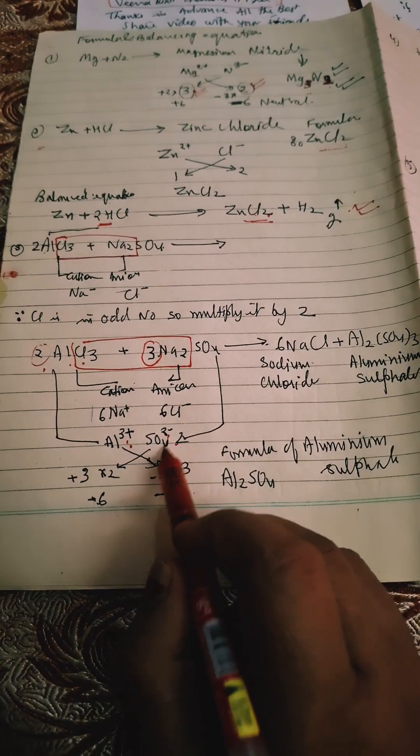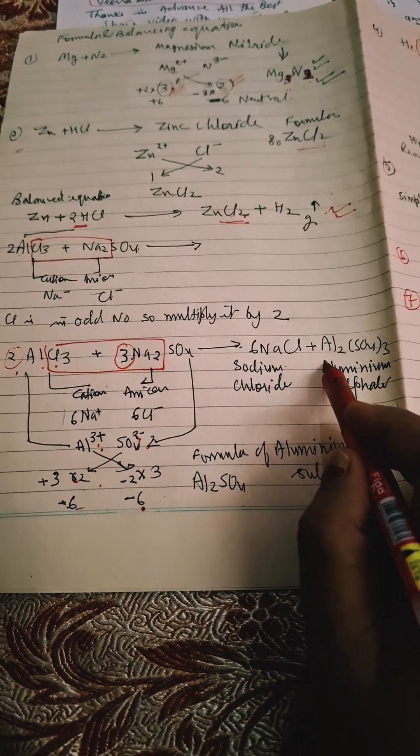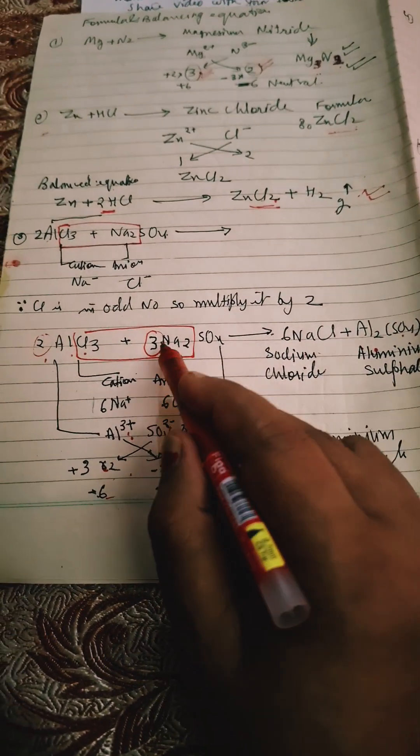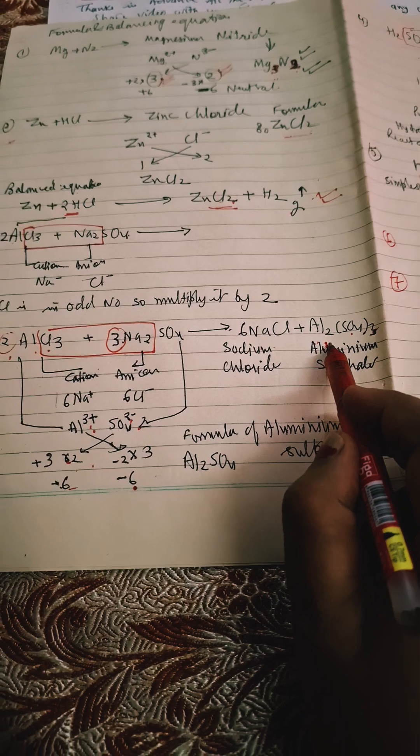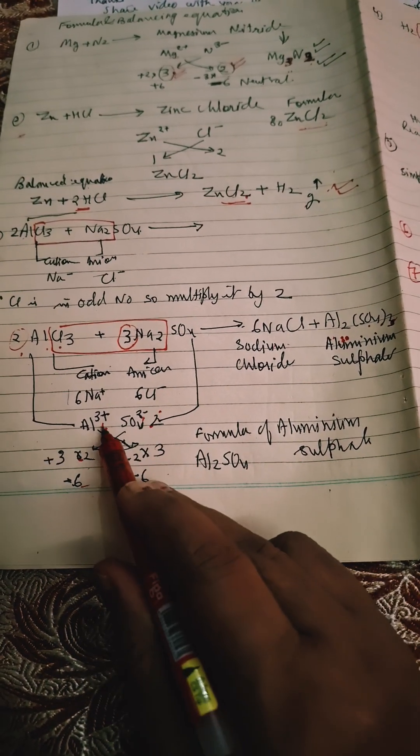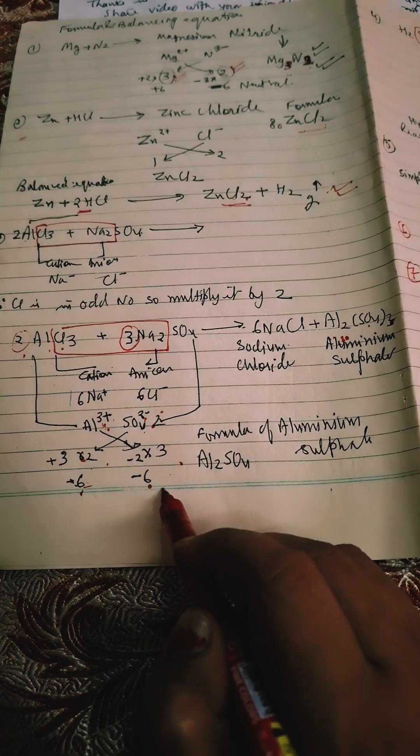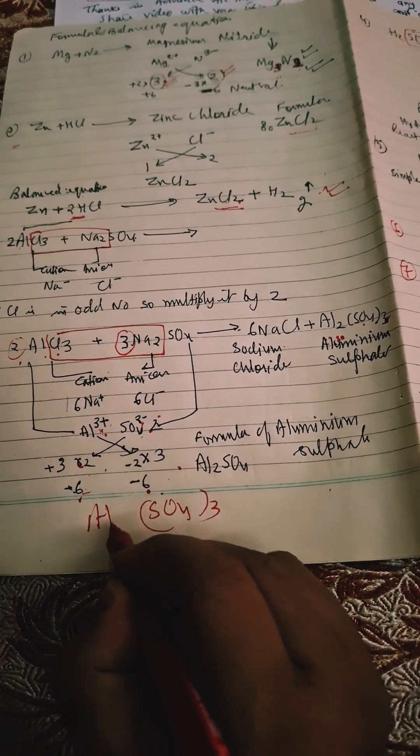Here aluminum is having 3 positive, SO₄ is 2 negative. Crisscross, so 2 will be here and SO₄ is having 3 in the bracket. This is written always on the subscript. SO₄²⁻ on the subscript of Al, and 3 in the within bracket SO₄²⁻, see like this, and Al like this.